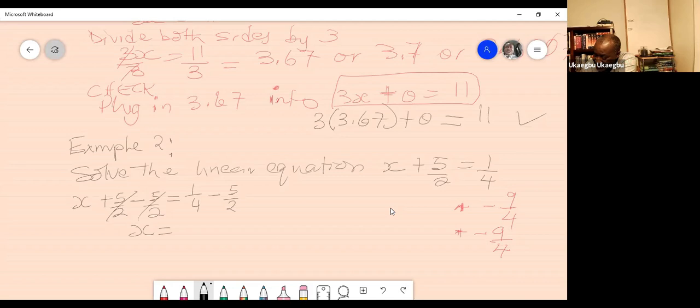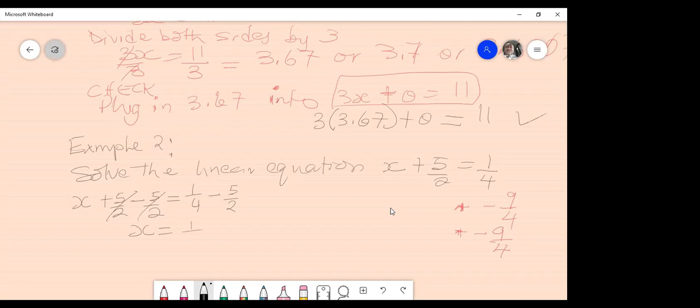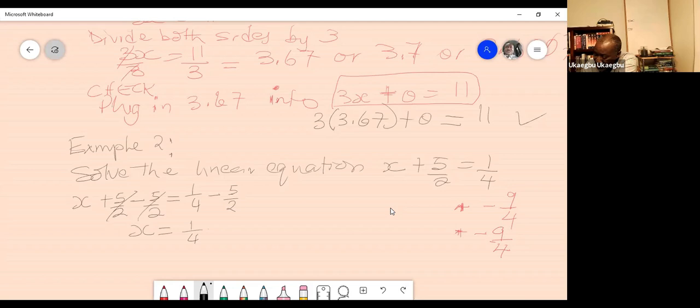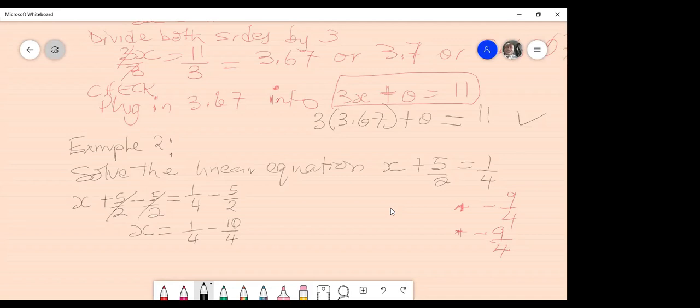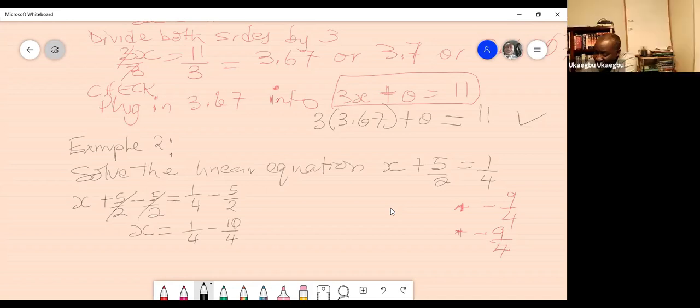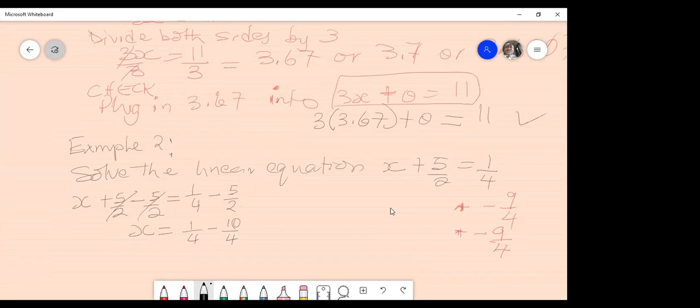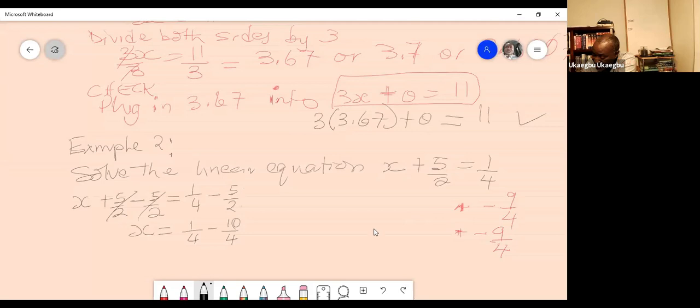And what would that be? So it would be 1 over 4 minus 10 over 4. How did you get that? How did you get the 10 over 4? Please explain. Because I multiplied 2 to 5 over 2. Okay. So you multiply 2 on the numerator of this and this and the denominator so that you have the same denominator. Yeah. Okay. Good. All right. Thank you. So next step.